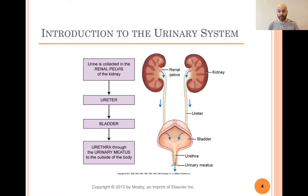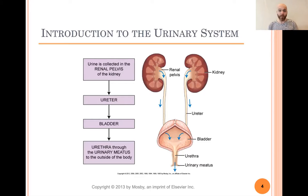The bladder is the fluid-filled sac that holds our urine until we're ready to go to the bathroom. At the bottom of the bladder, you've got the urethra, which is the tube that carries all the urine from the bladder to the outside of the body. And the urinary meatus is the outside opening of the urethra, where it actually comes out.